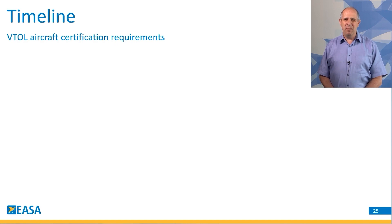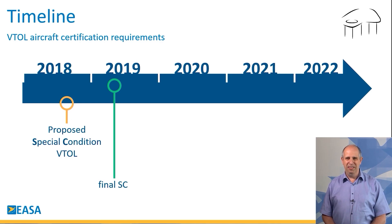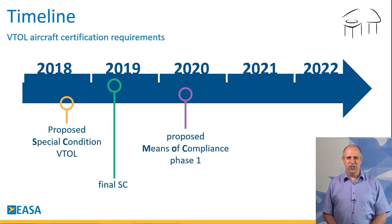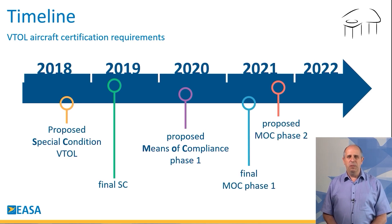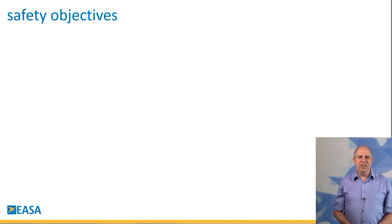To give a bit of background, here is a timeline of the technical requirements we have developed. Back in 2018, we proposed a special condition VTOL, which included the high-level objectives of what the aircraft requirements need to meet. Then in 2019, we addressed all the comments received during consultation and published the final version. And since 2019, we have been publishing regularly means of compliance, which explains means to meet the high-level objectives of the special condition.